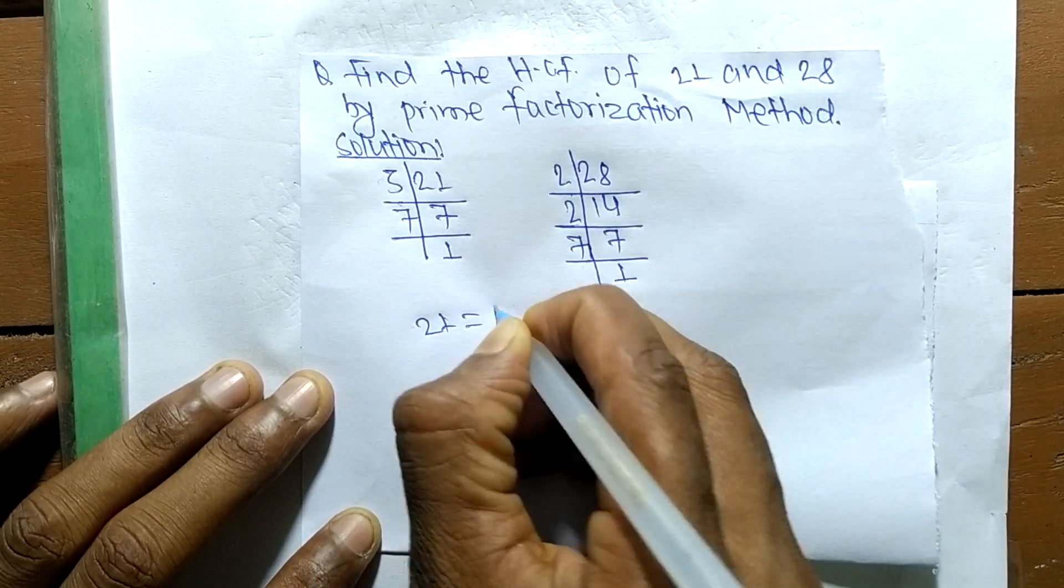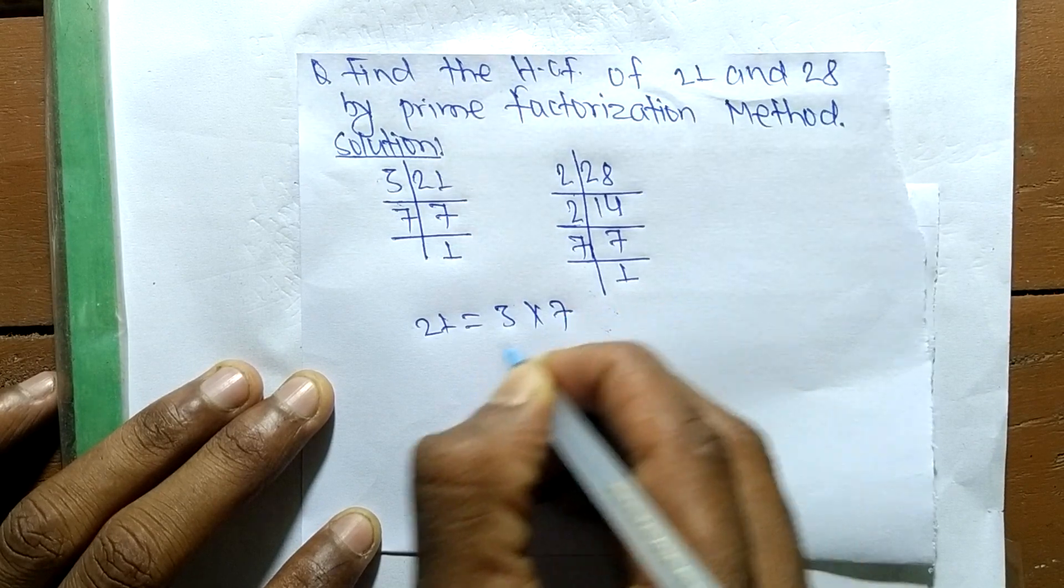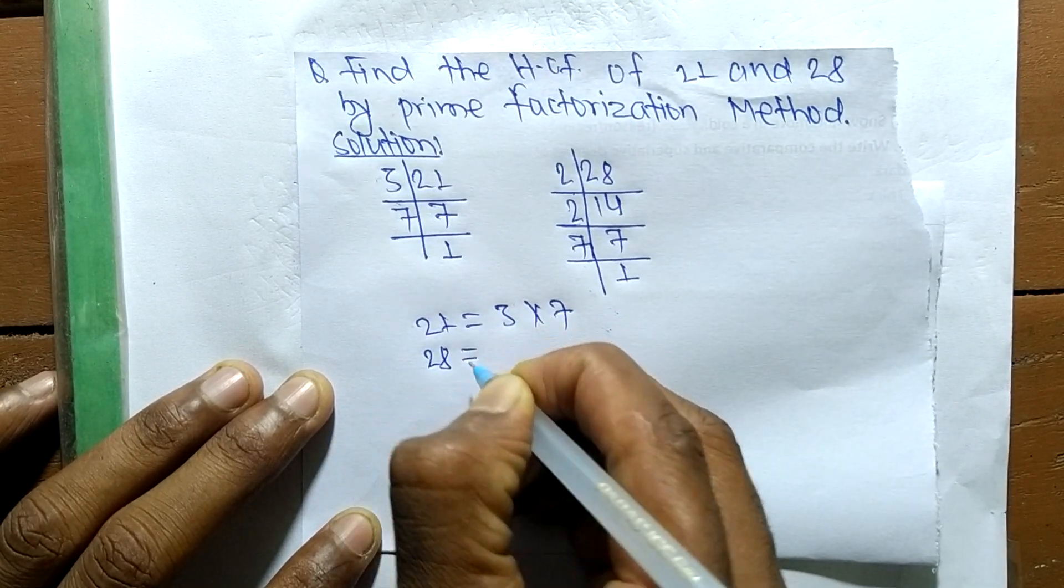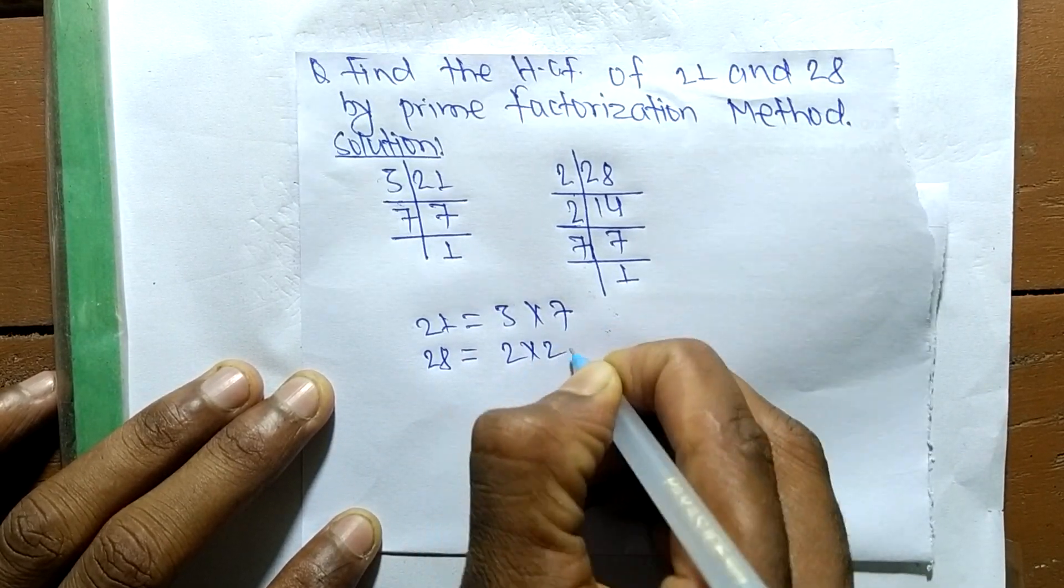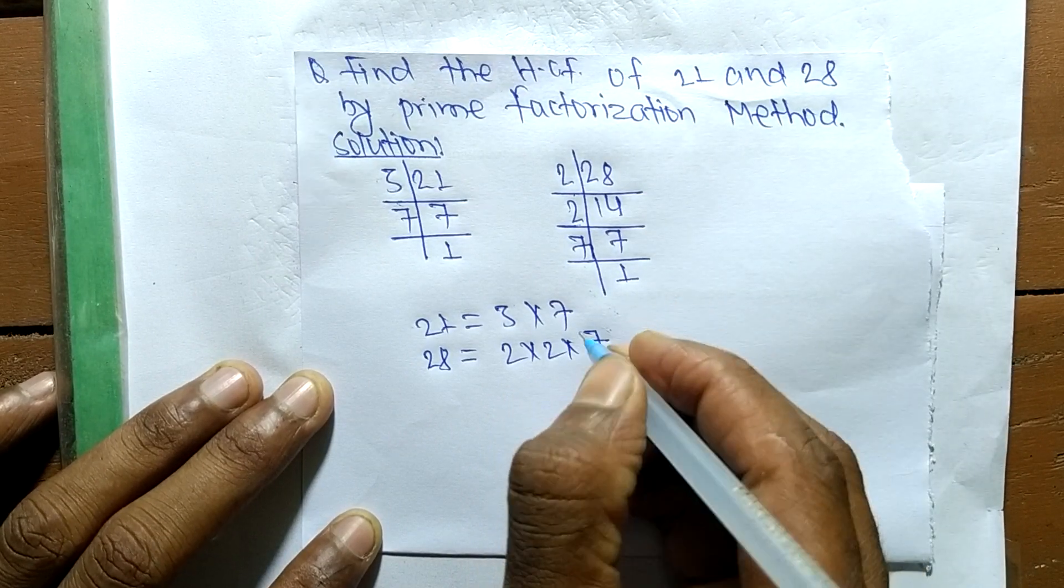we can write 21 is equal to 3 times 7, and 28 is equal to 2 times 2 times 7.